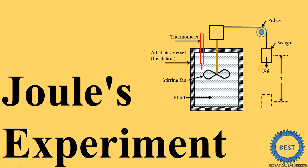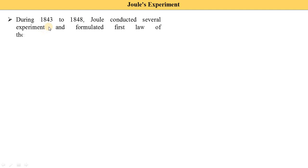Now let's move towards the theoretical parts of the Joule experiments. During 1843 to 1848, Joule conducted several experiments and formulated the first law of thermodynamics. They did not do just one experiment — they performed a number of experiments, and from these experiments they proved the first law of thermodynamics. This is called the Joule experiments.